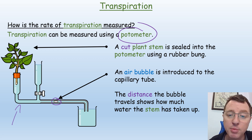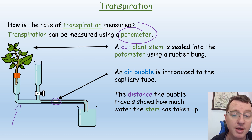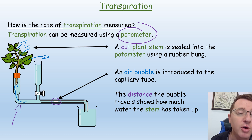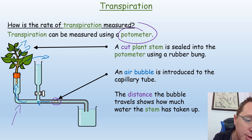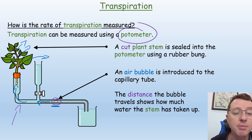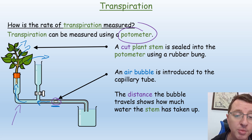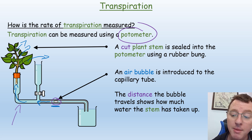The distance that this bubble travels shows how much water the stem has taken up. As the leaves lose water through transpiration, that water is replaced from the potometer, and as the water flows up into the plant stem, it draws water along the capillary tube, which means the air bubble moves. We can see how far that air bubble moves by placing a ruler behind it and measuring the distance in millimetres per minute.